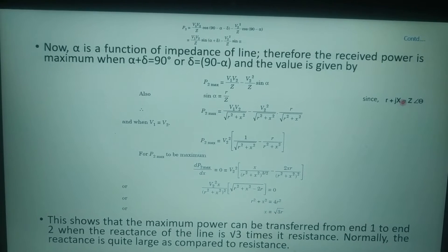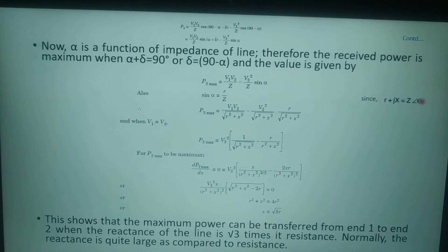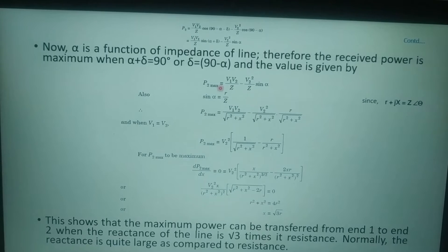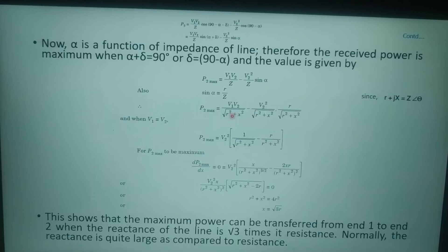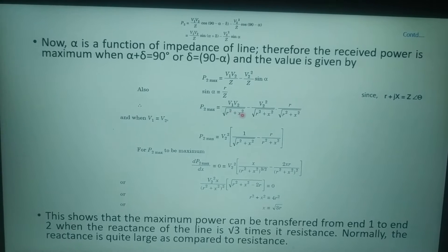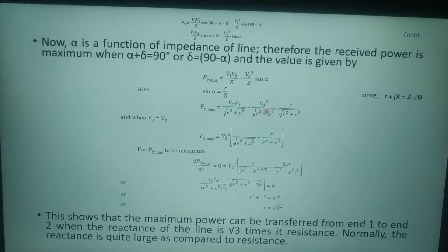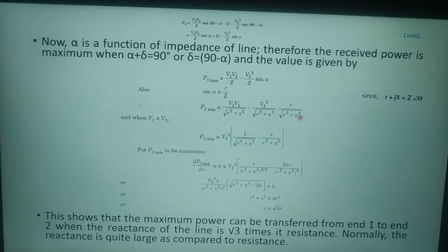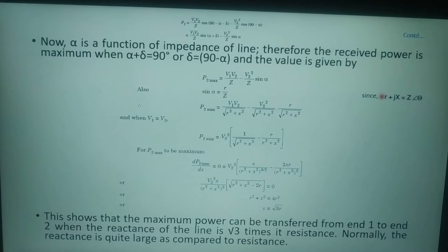Since sin(alpha) equals R over Z — because R plus jX equals Z angle theta and theta equals 90 minus alpha — therefore P2_max equals V1*V2 upon sqrt(R² + X²) minus V2² upon sqrt(R² + X²) times R upon sqrt(R² + X²).